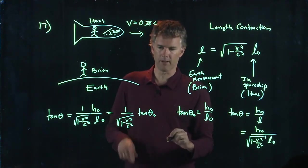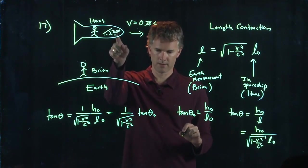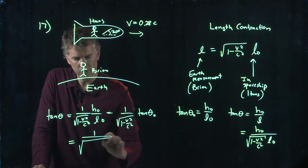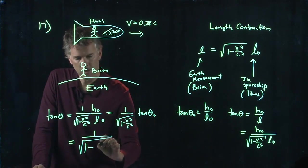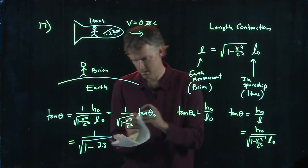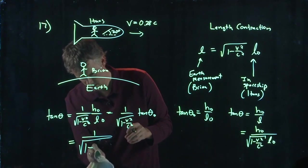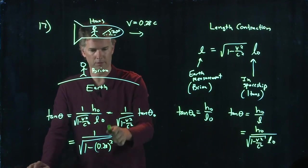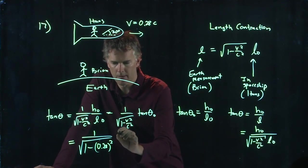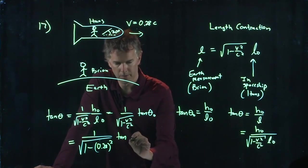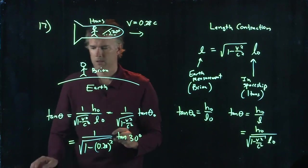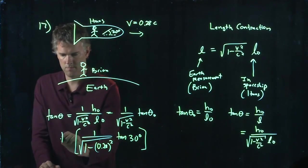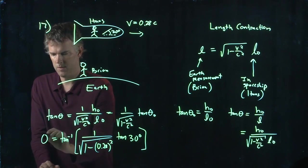And now you know all of that stuff. You know V, you know theta-naught, you can calculate theta. So let's plug in some numbers and see what we get. We've got one over the square root, one minus 0.28. That thing is squared. The C's are, of course, going to cancel out. And then we have the tangent of 30 degrees. And we're going to take the arc tangent of that whole thing. And that's going to be our theta.